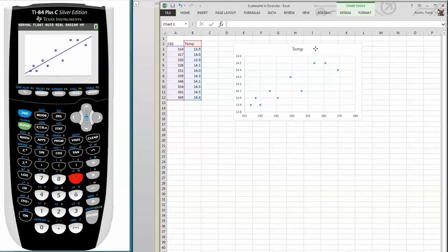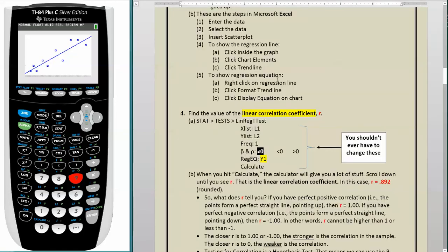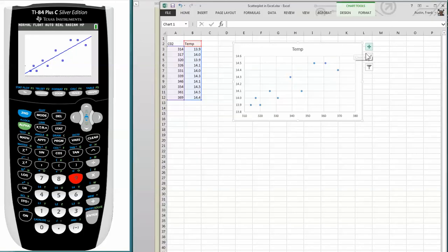To show the regression line on the scatter plot, you click inside the graph. You click on chart elements. And you click trend line. So first we will click inside the graph and click chart elements. So when we clicked inside the graph, we got this. And this little plus sign here, that's chart elements. So we're going to click on that. And we're going to click trend line. And there you see the regression line.